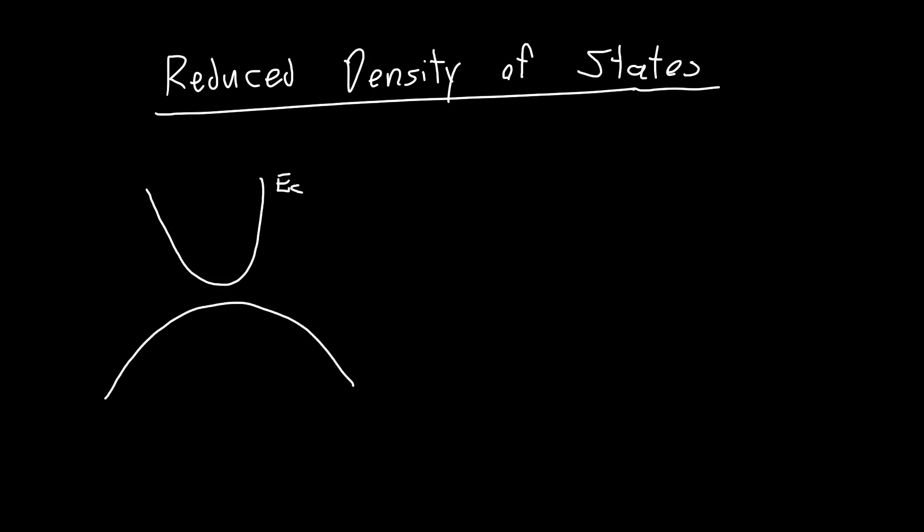In this video we're going to be talking about the reduced density of states, often sometimes called the optical density of states. This is what's fundamentally going to allow us to treat our band structure, so our conduction band and our valence band,